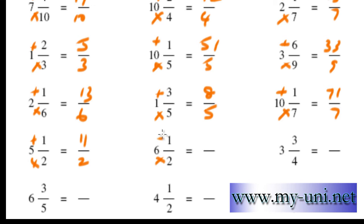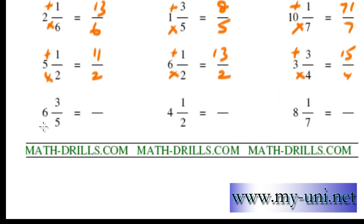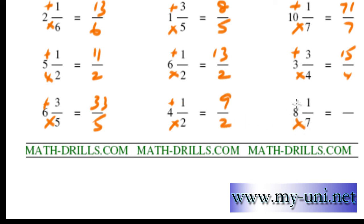6 times 2 is 12, plus 1 is 13 over 2. 4 times 3 is 12, plus 3 is 15 over 4. 6 times 5 is 30, plus 3 is 33 over 5. 4 times 2 is 8, plus 1 is 9 over 2. 7 times 8 is 56, plus 1 is 57 over 7 is the answer. Thank you very much.